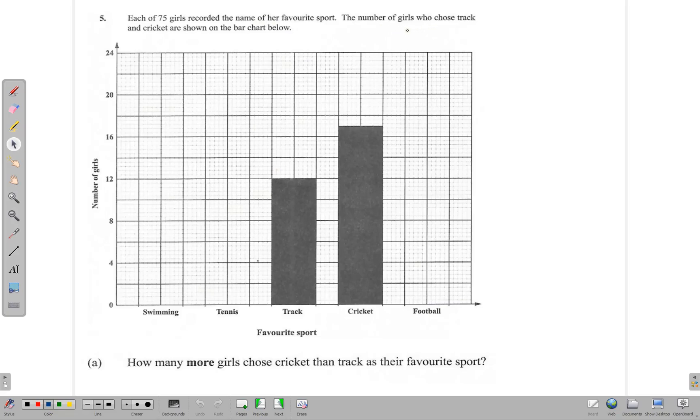The number of girls who chose track and cricket are shown on the bar chart below. So this is the information so far - it's a partial bar chart. Swimming, tennis, and football are missing, but we have track and cricket.